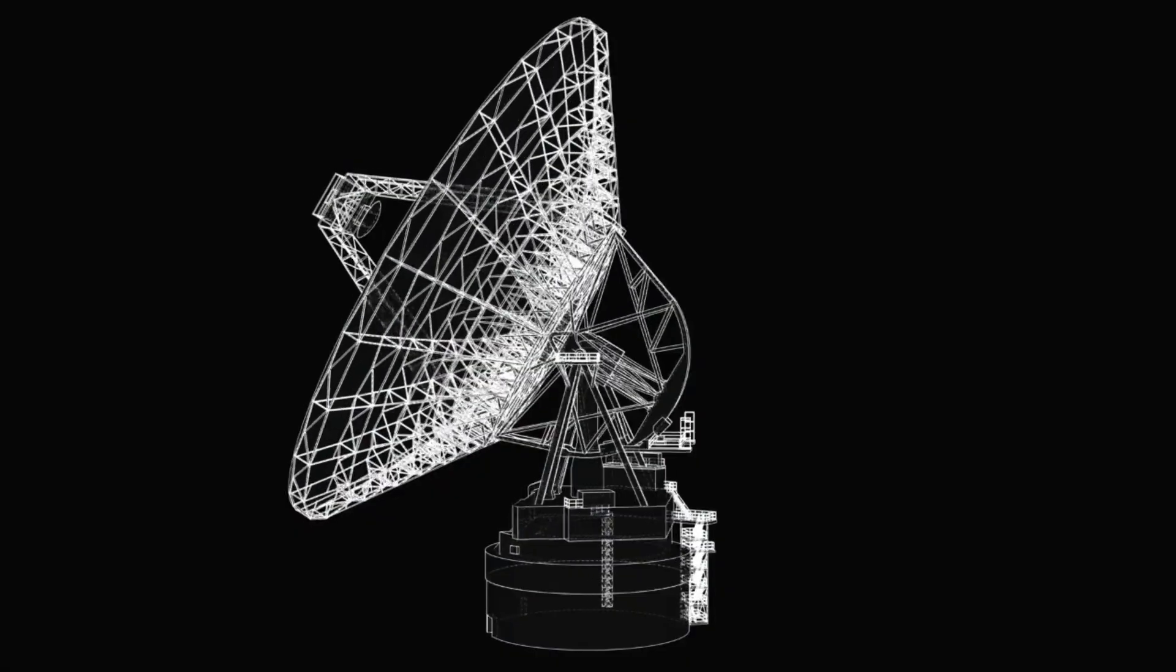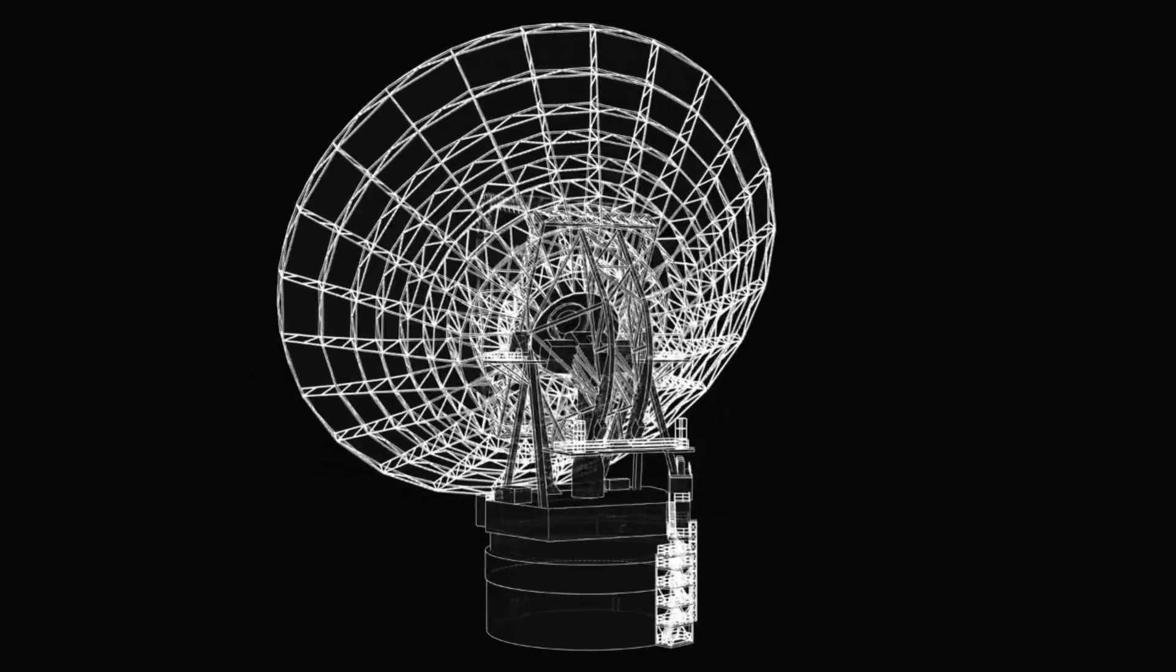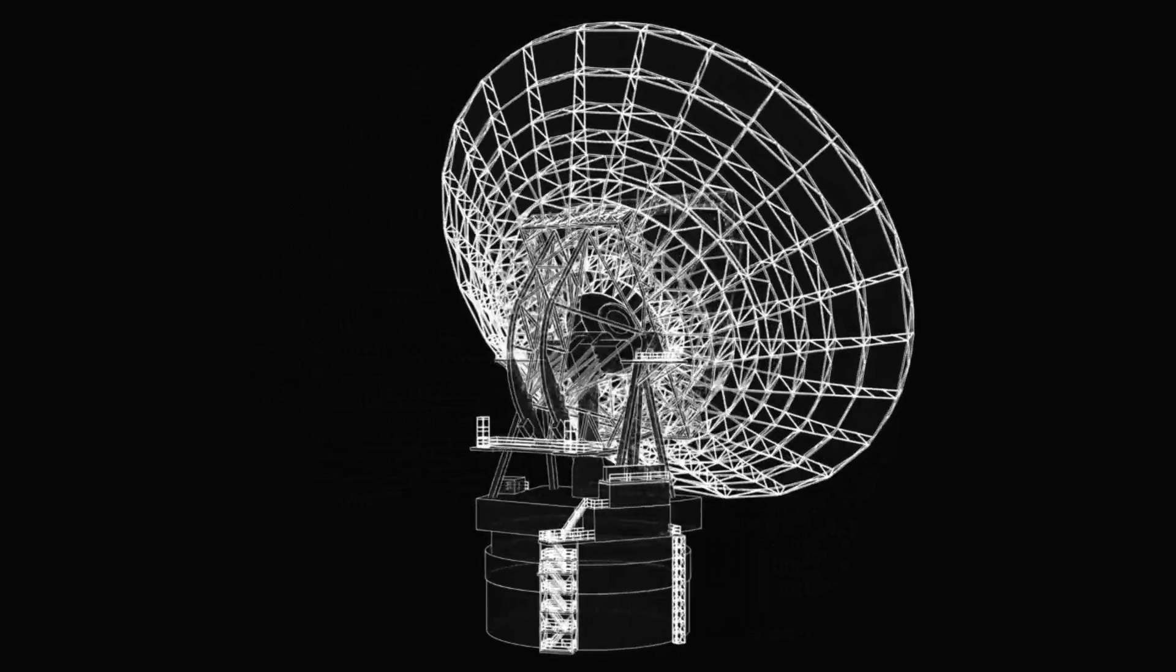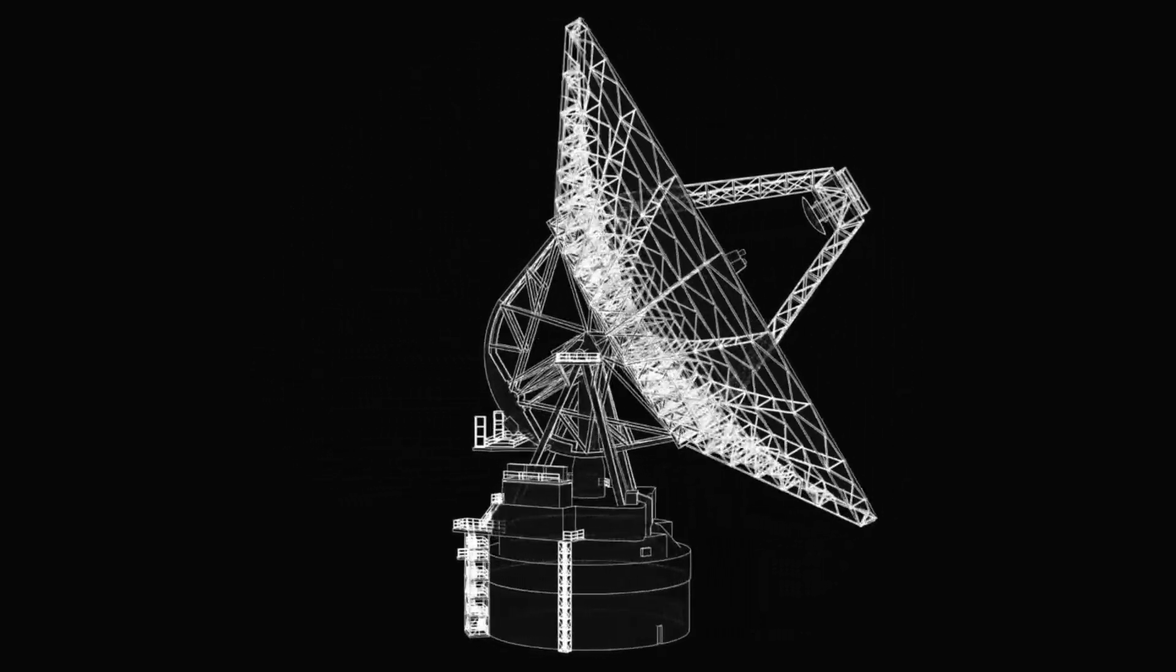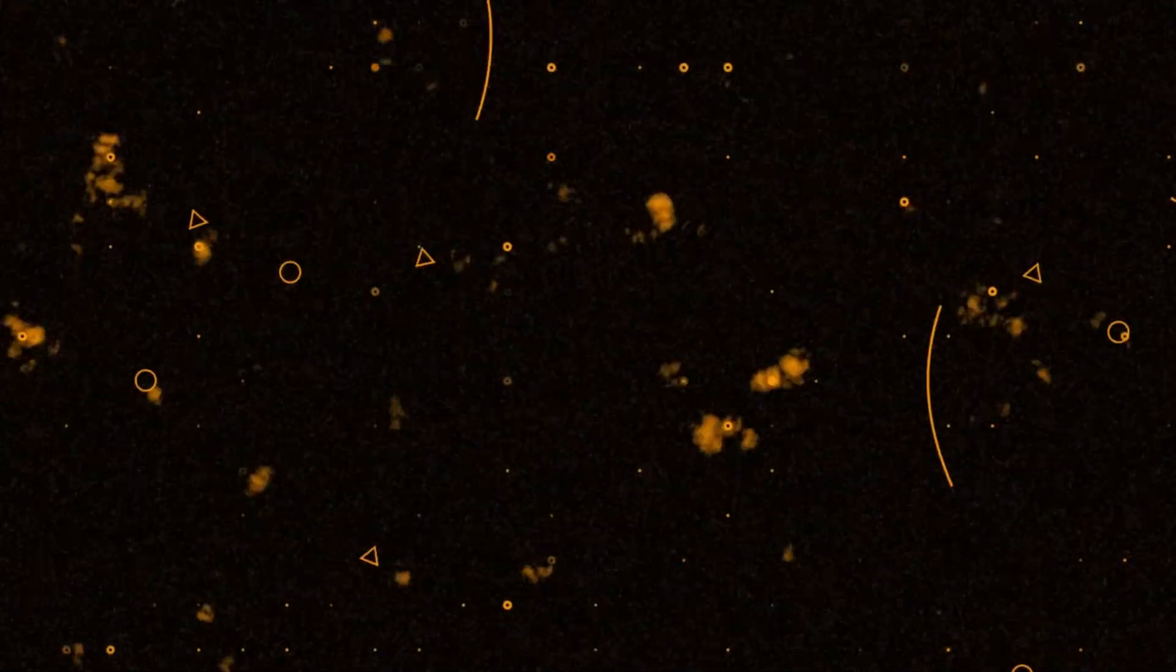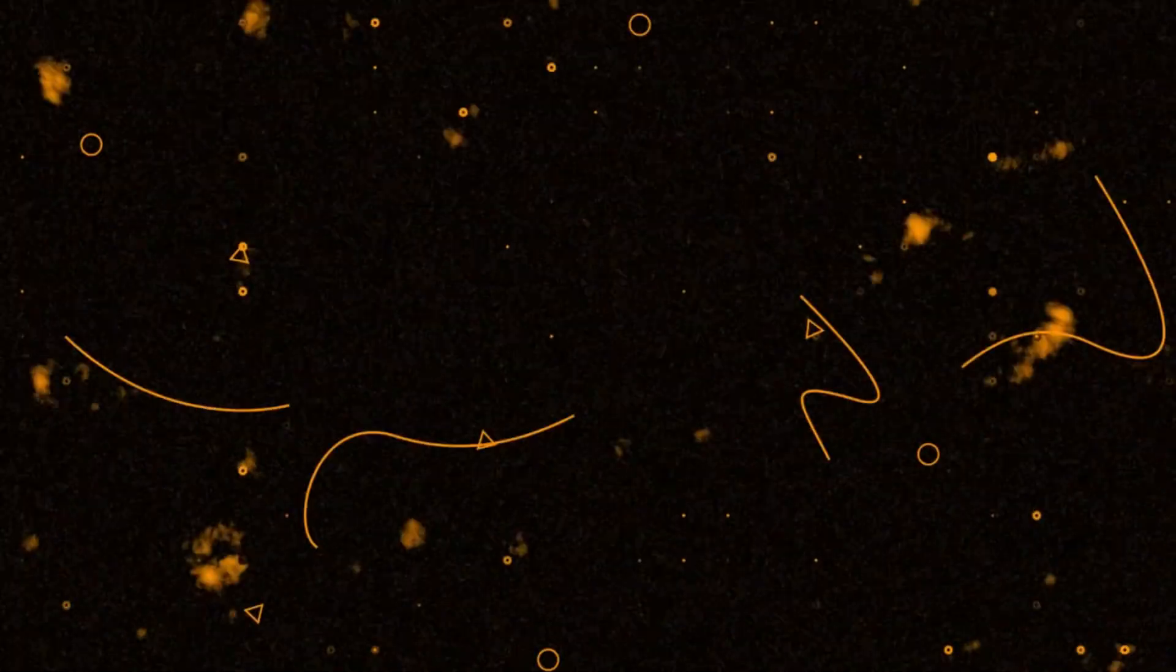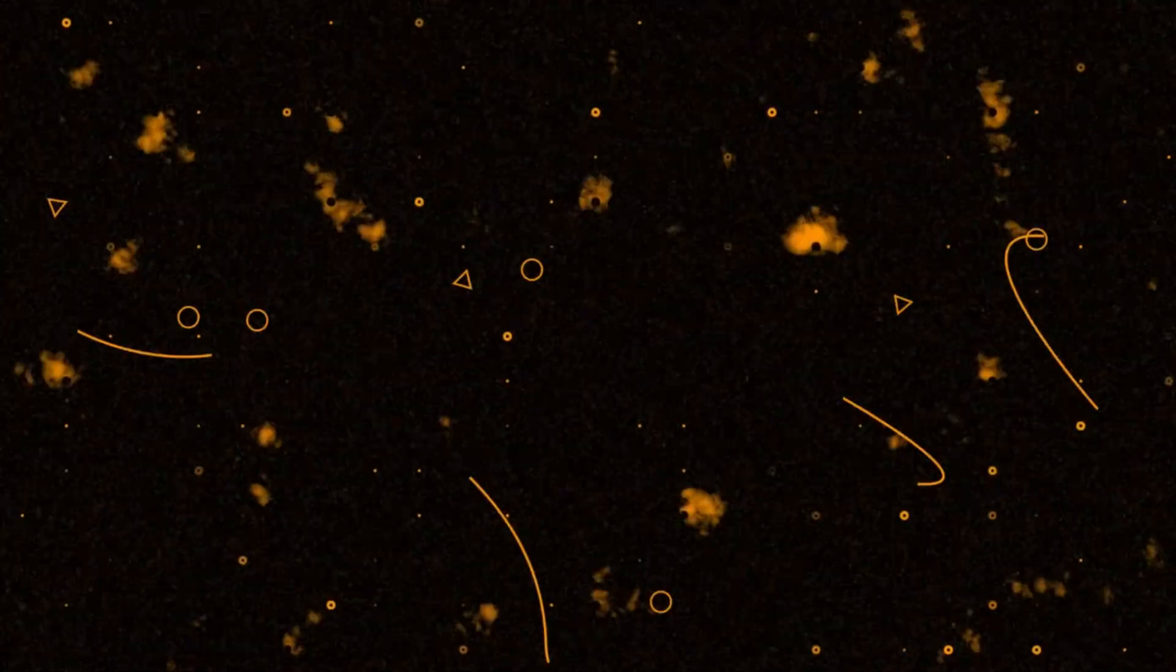NASA recently announced that the James Webb Space Telescope has made contact with distant regions of the observable universe that we had never seen before. These areas are located extremely far away, so far that their light began traveling toward us nearly 13.8 billion years ago, just after the Big Bang occurred.